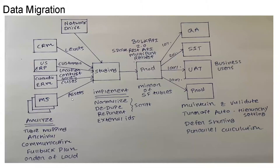My data migration strategy utilizes ETL staging and production environments. Data migration sources would be the existing CRM (leads), both ERPs (customer, location, contact, sales, and cases data), monitoring systems (assets and products data), and the network drive (files). I'll segregate my data migration into three phases — Analyze, Implement, and Maintain. During the Analyze phase I'll do table mapping between different systems and Salesforce, determine which data needs to be archived, create a communication plan and fallback plan, and determine the order of load. During the Implement phase I'll normalize data from different inputs, deduplicate using ETL scripts, re-parent records, and stamp external IDs.